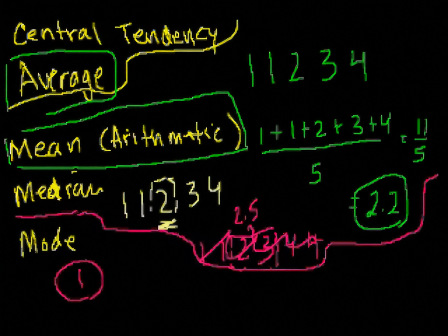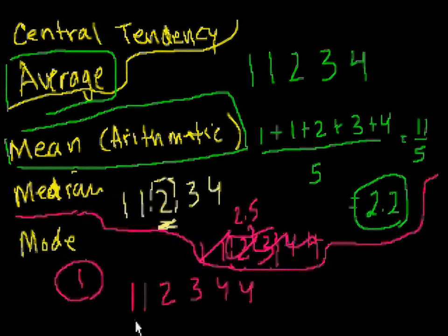So the mode here is 1. So mode, you kind of say, is the most common number. And then you could kind of say, well, hey, Sal, what if this was our set? 1, 1, 2, 3, 4, 4. Here I have two 1's and I have two 4's.